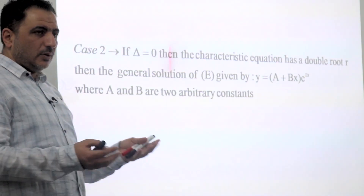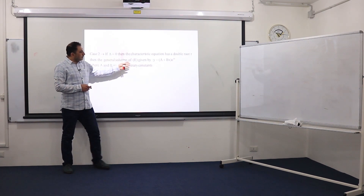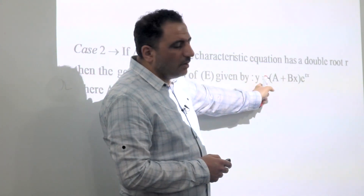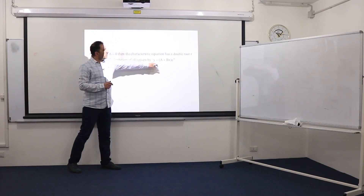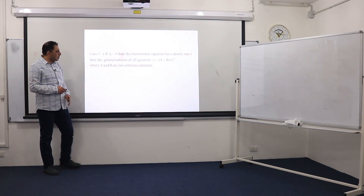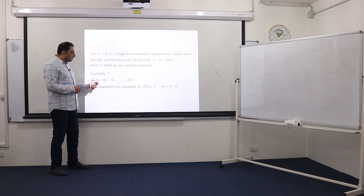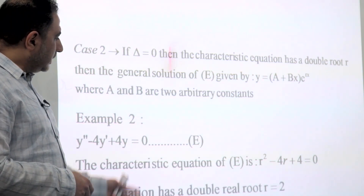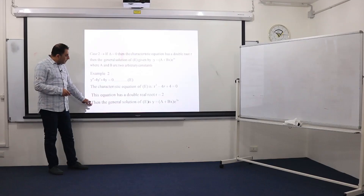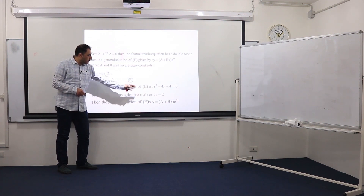Case 2: if delta equals zero, the characteristic equation has a double root r. The general solution of the differential equation takes the form y = (a + bx)e^(rx). You have to recall this form to solve such equations; a and b are two arbitrary constants. Example: y'' - 4y' + 4y = 0. The characteristic equation is r² - 4r + 4 = 0, which has a double root r = 2. Applying the formula directly: y = (a + bx)e^(2x).